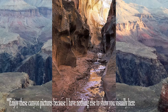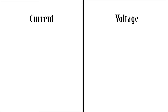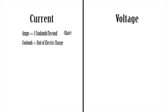Voltage is what drives the current, but there doesn't have to be current. Voltage is a difference between two points. So let's talk about the units real quick just to get this in perspective. We measure current in what we call amps.